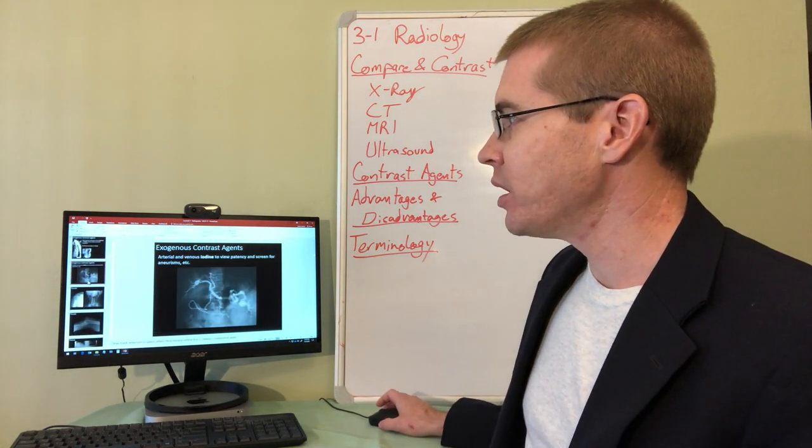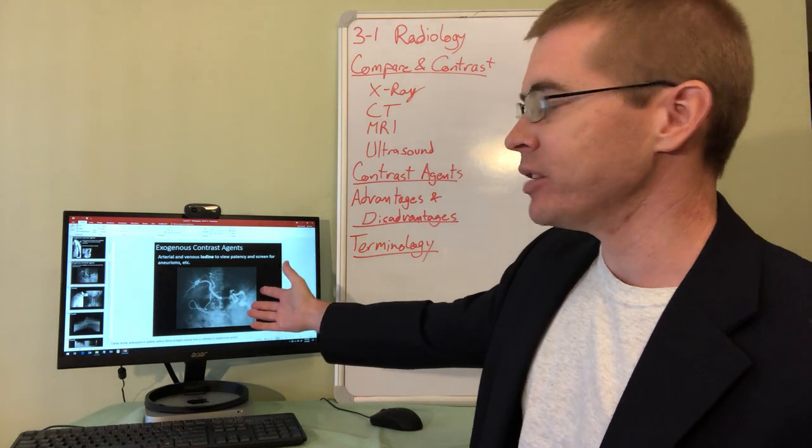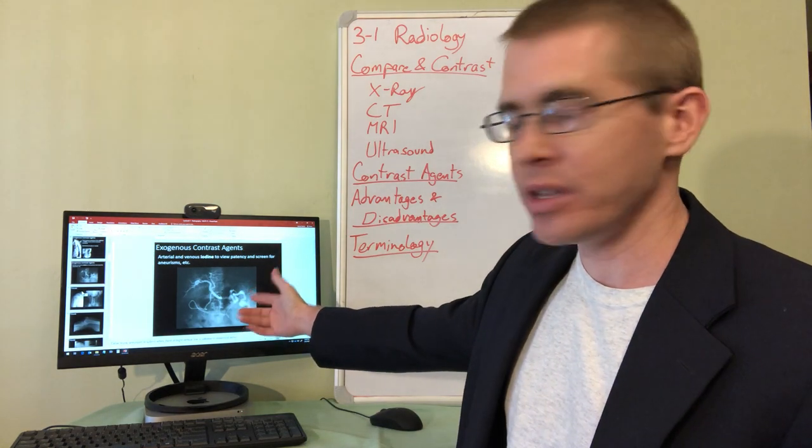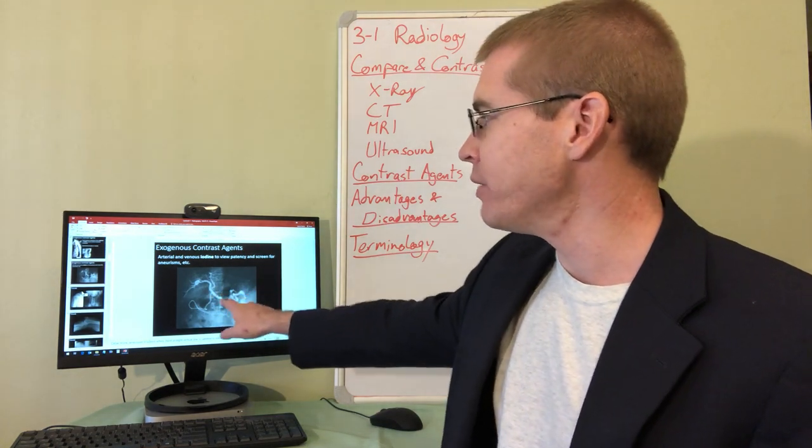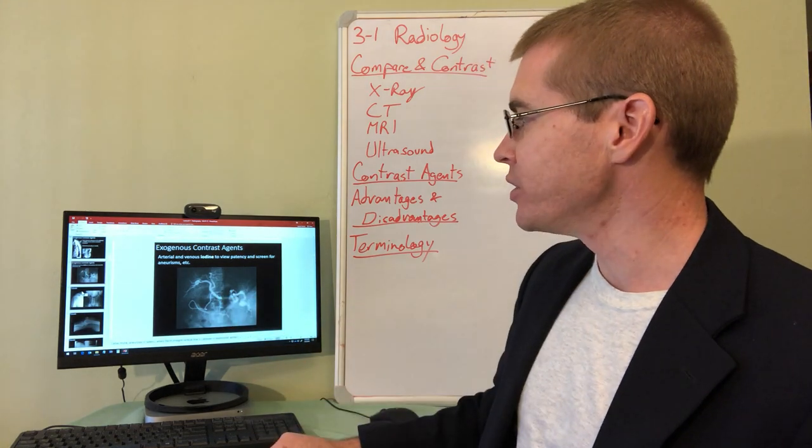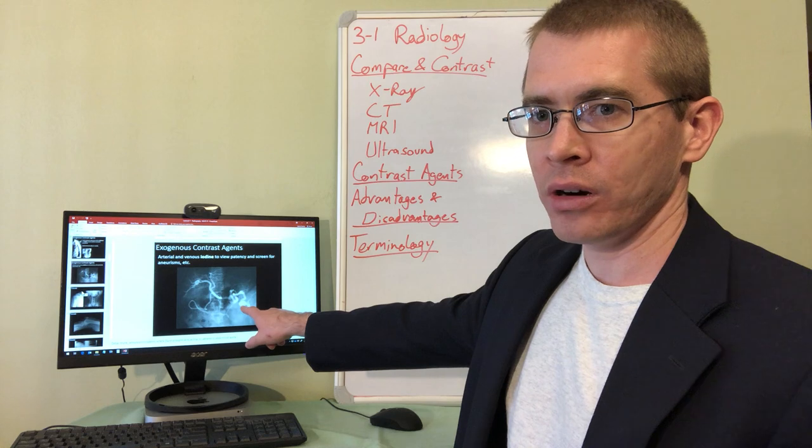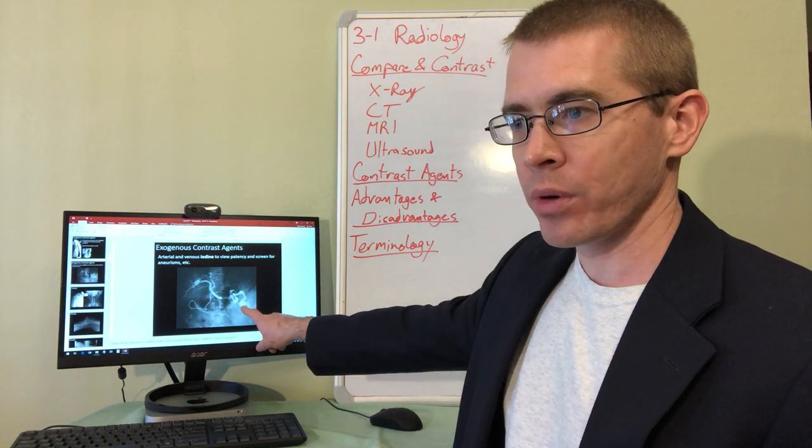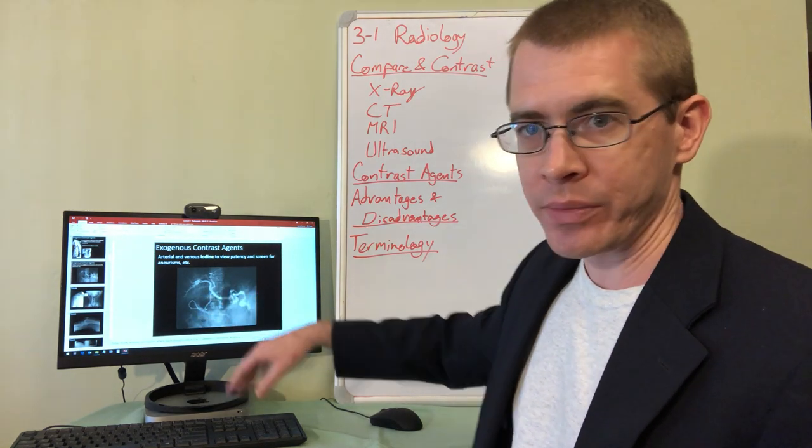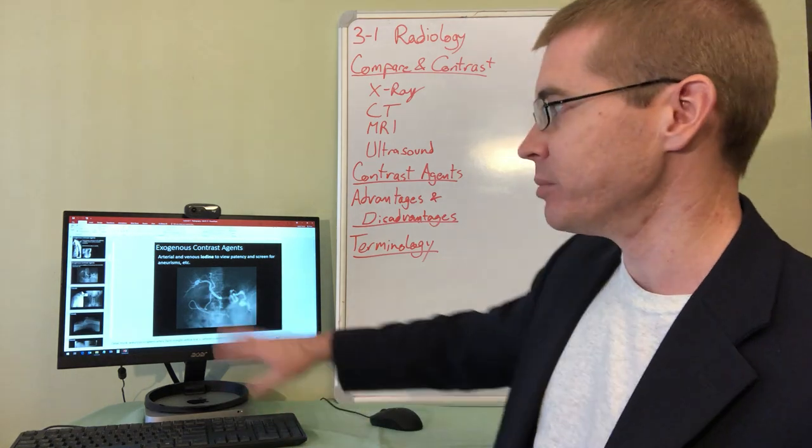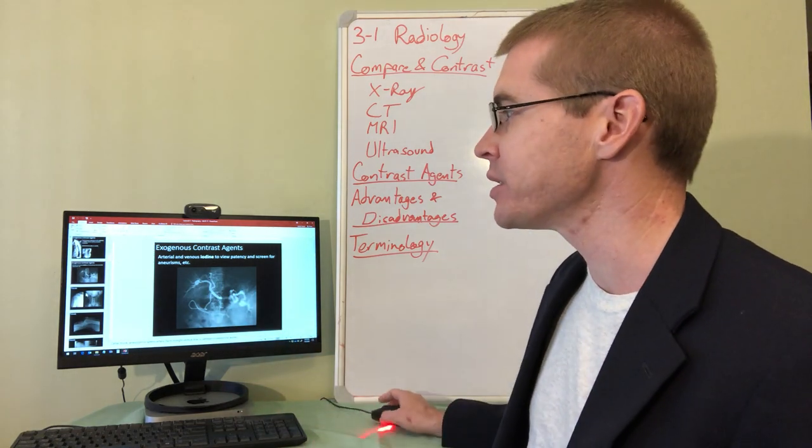These contrast agents can be added to the venous system so you can see the pathways of the arteries and veins, and in this case this person has quite a large aneurysm forming in their splenic artery. You don't know the names of these arteries, I can recognize it, but by the end of the course you'll be able to recognize that.